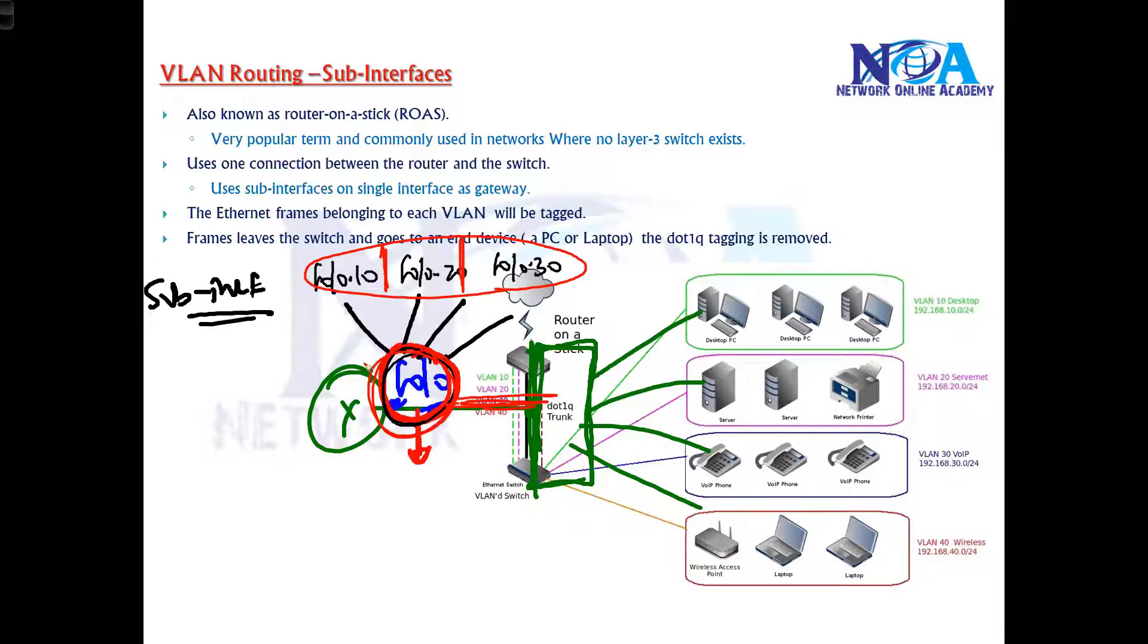So which means even though physically you are seeing this as one link, but this can behave just like as if they are separate interfaces. And those interfaces are logically separated inside the physical interface and we call them as sub-interfaces here. So there is only one physical connection.